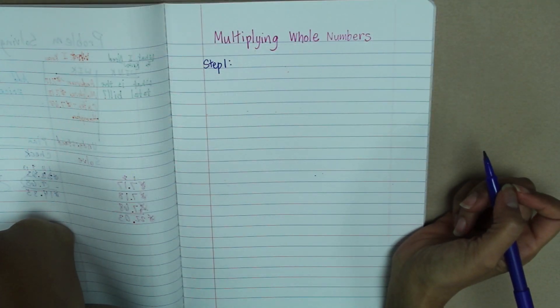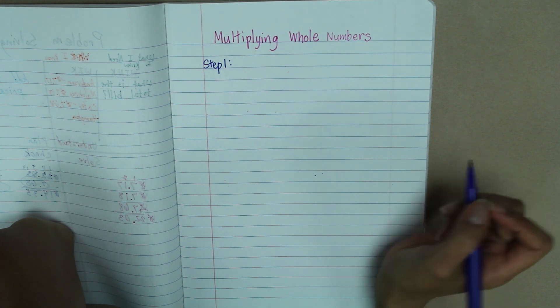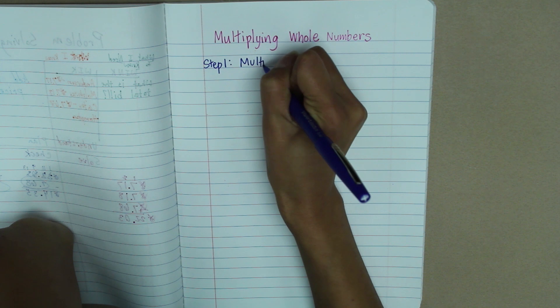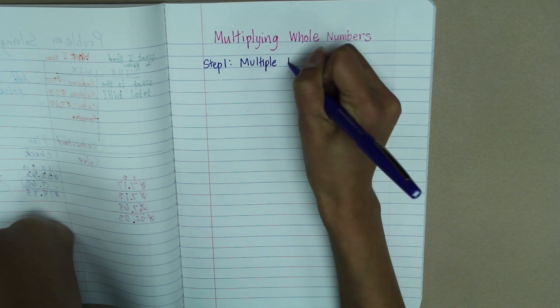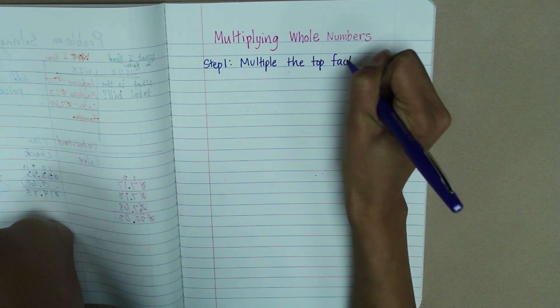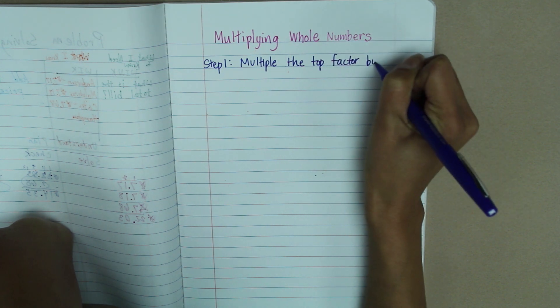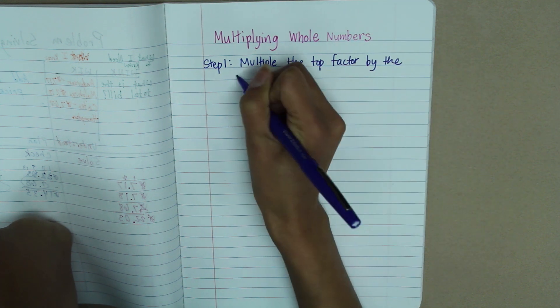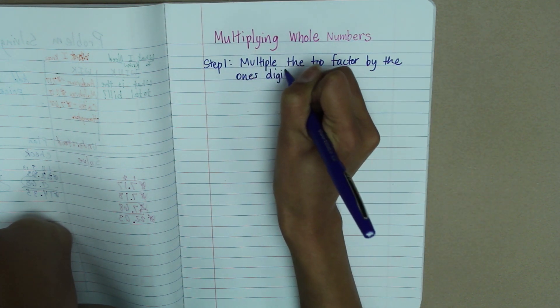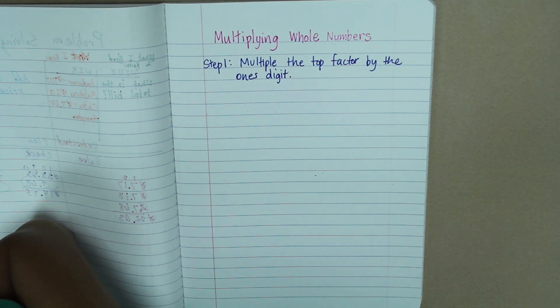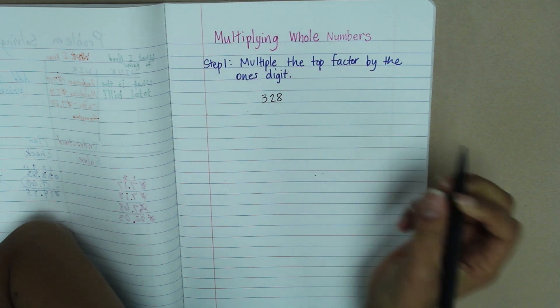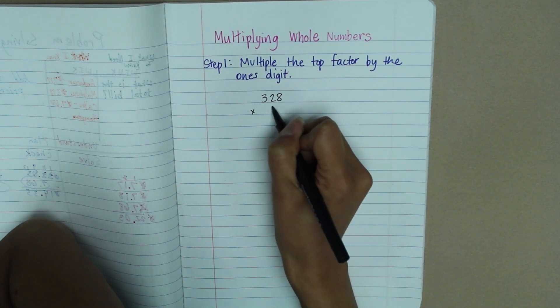Hi, today we're going to be multiplying whole numbers. Step 1, we're going to multiply the top factor by the one's digit. So what does this look like? For example, 328 times 14.